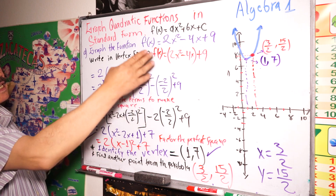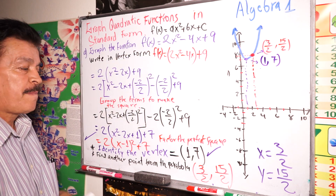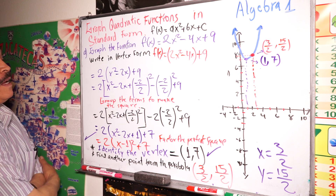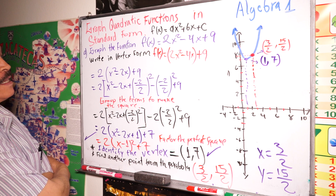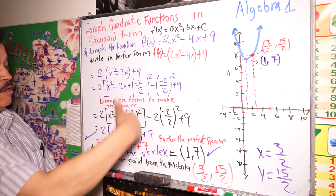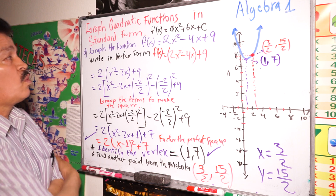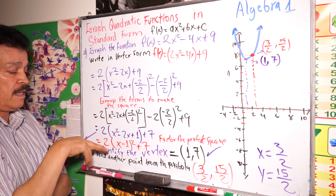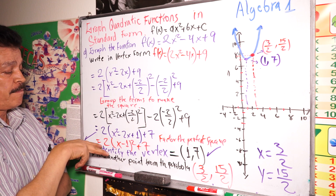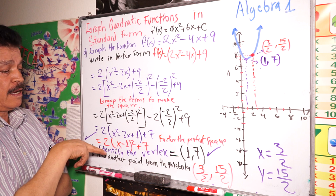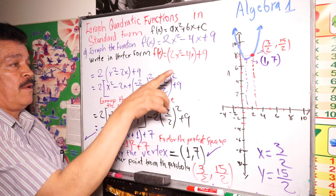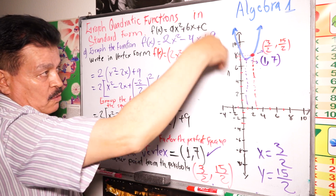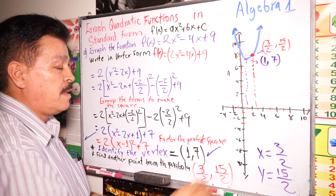So that's the graph belonging to this function. To find the graph of a quadratic function, we need to first write it in vertex form to find the vertex, and then find another point from the parabola. When you have the vertex and another point, you are able to draw the graph.